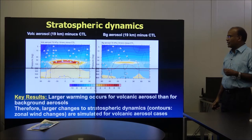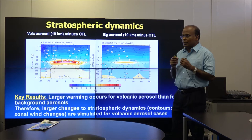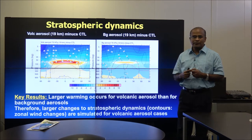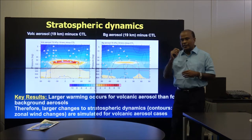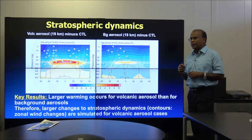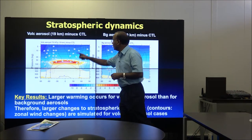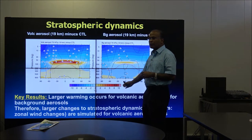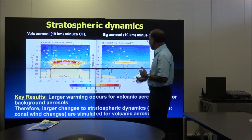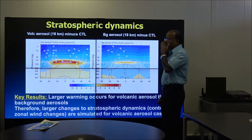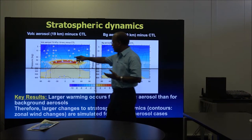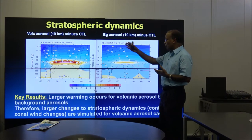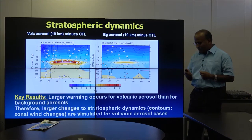Volcanic aerosols have larger absorption cross-sections due to their bigger particle size. In this model, volcanic aerosols absorb both near-IR solar radiation and terrestrial radiation, while tiny background aerosols have only weak near-IR absorption. When volcanic aerosols are at 19 km, local stratospheric warming can approach or exceed 10°C, compared to only 1-2°C for background aerosols. These large temperature perturbations cause large changes in stratospheric zonal winds — much larger than in the background aerosol cases.